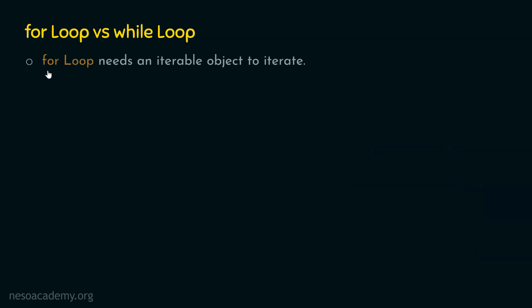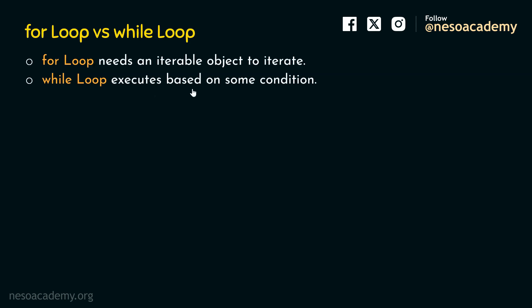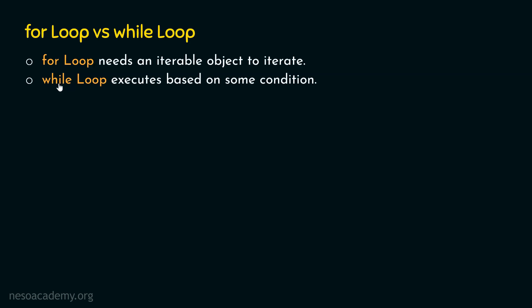Difference number one: for loop needs an iterable object to iterate. On the other hand, while loop executes based on some condition. For loop needs an iterable object — this means that for loop can run based on an iterable object. That iterable object can be a list, dictionary, tuple, or it can be an object returned by the range function. For loop needs an iterable object in order to iterate; while loop executes based on some condition.